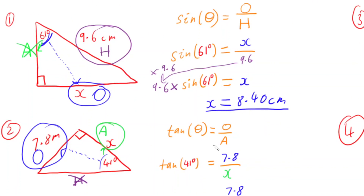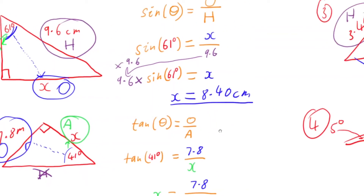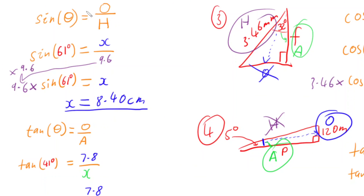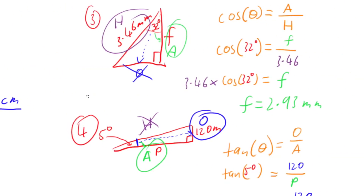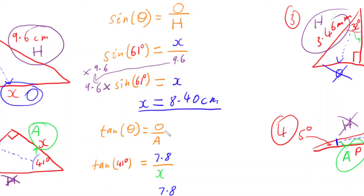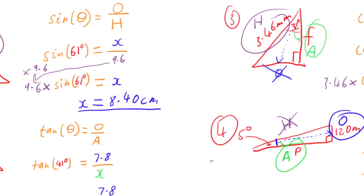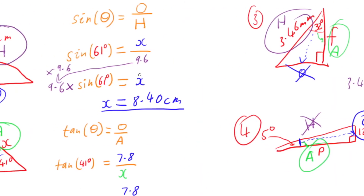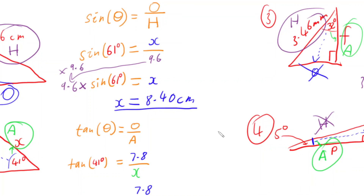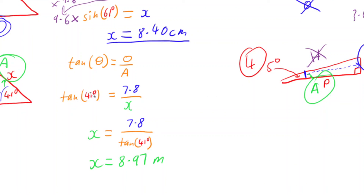So, for a right-angled triangle where you want to find an unknown side: label the sides, work out which two you have and which one you don't. The two you have tell you the trig ratio — sine if you have opposite and hypotenuse, cosine if you have adjacent and hypotenuse, tangent if you have opposite and adjacent. Plug in your numbers and do the required algebra — multiply the number in front of the trig ratio, or if the unknown is on the bottom, swap the trig ratio and the unknown.